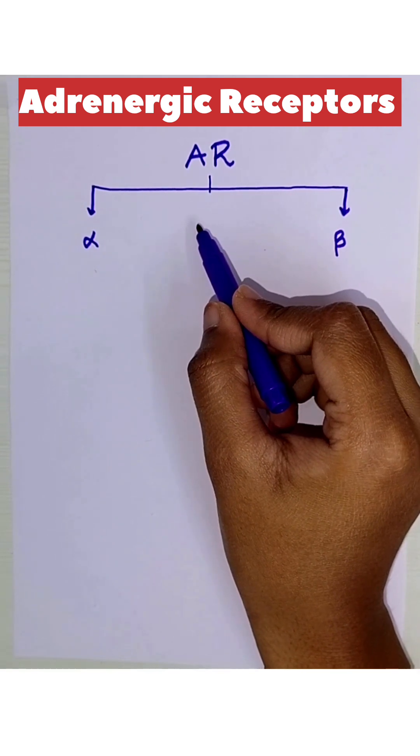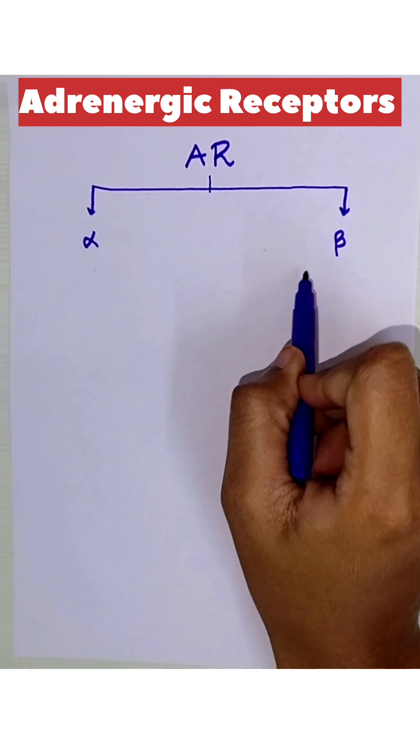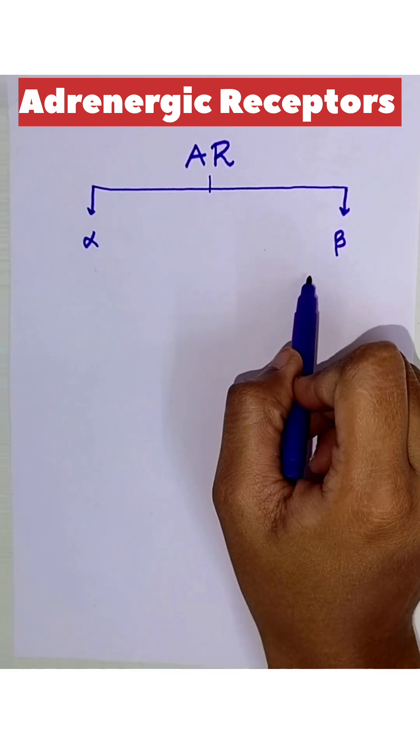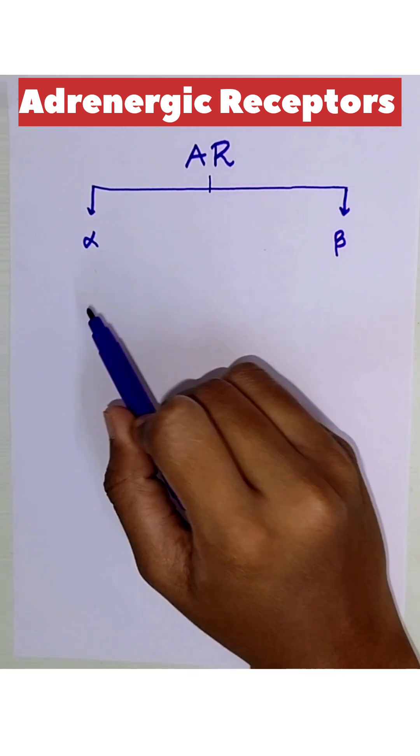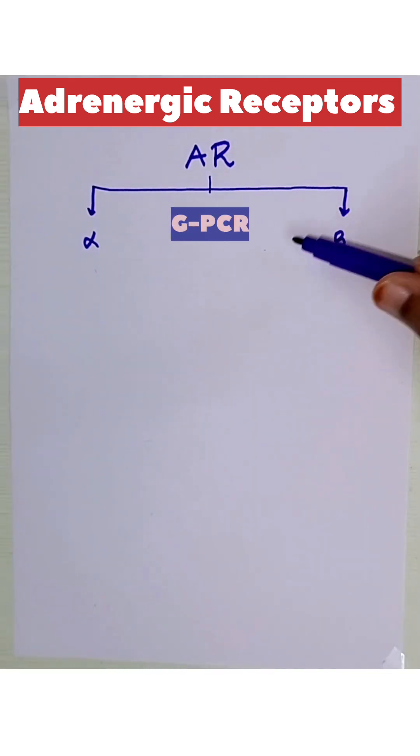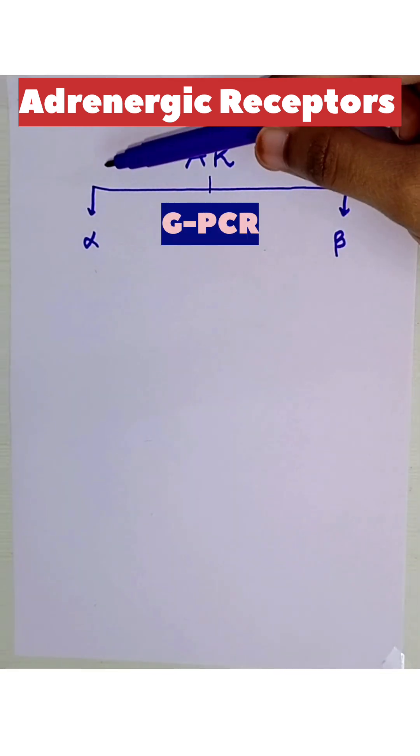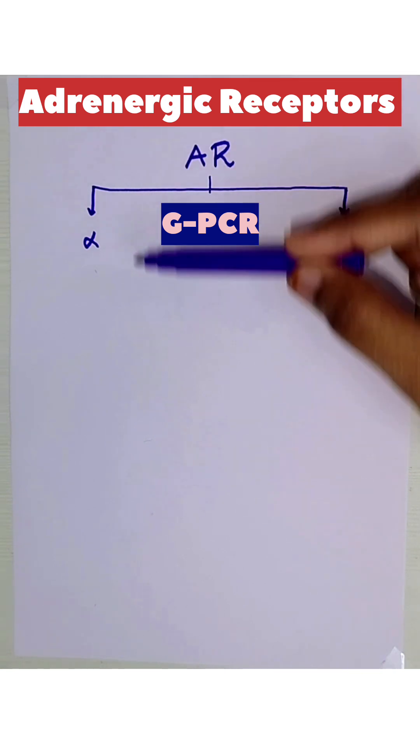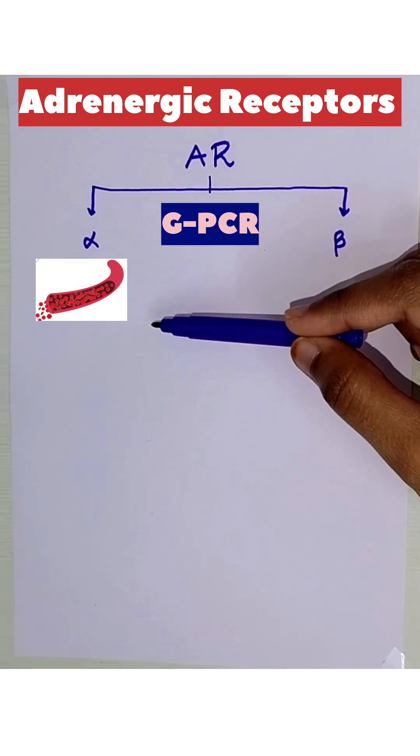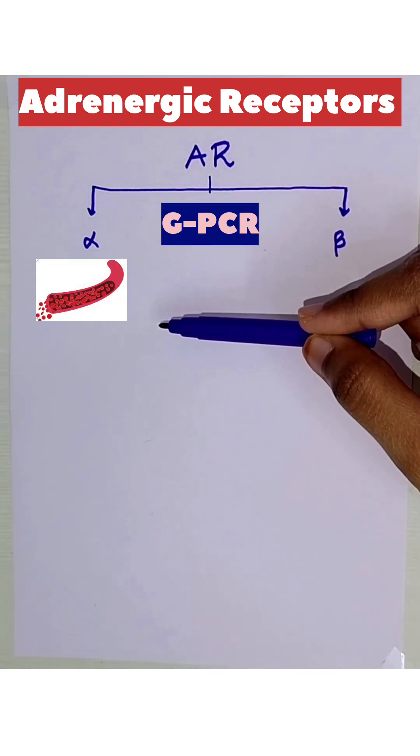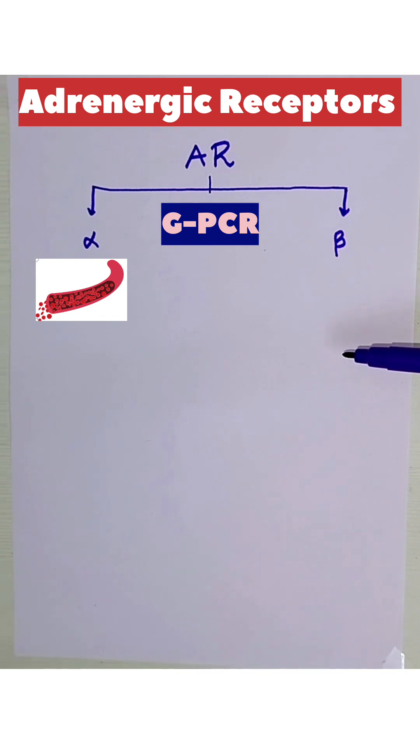Adrenergic receptors are classified into alpha and beta. Both alpha and beta are G-protein coupled receptors, GPCR. Alpha receptors are mainly found in blood vessels causing vasoconstriction, whereas beta receptors affect the heart, lungs, and metabolism.